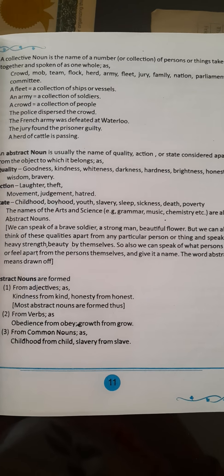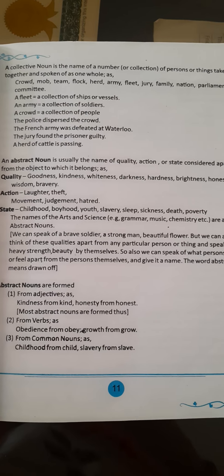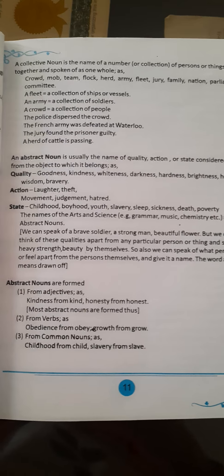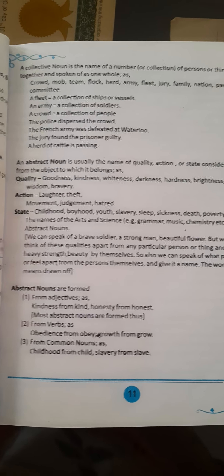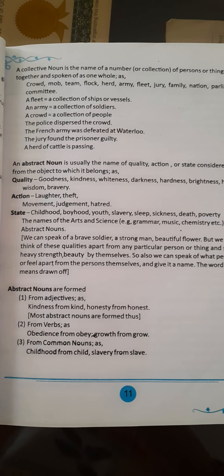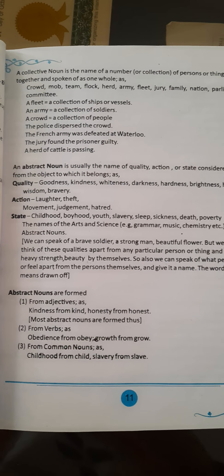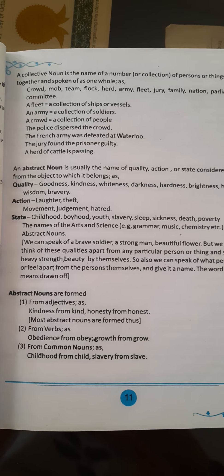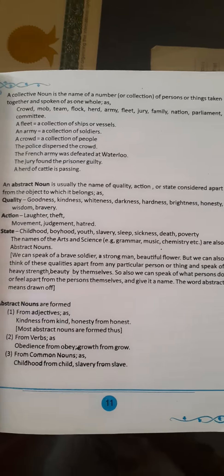A fleet: a collection of ships or vessels. An army: a collection of soldiers. A crowd: a collection of people. Example sentences: The police dispersed the crowd. The French army was defeated at Waterloo. The jury found the prisoner guilty. A herd of cattle is passing.